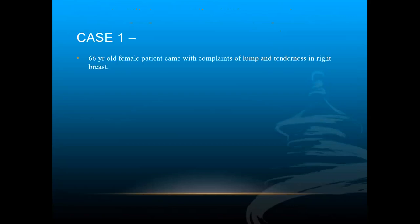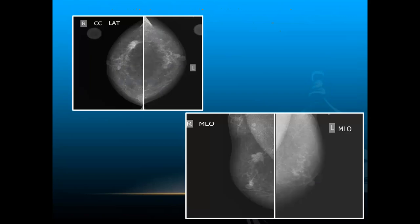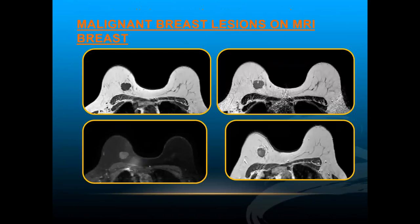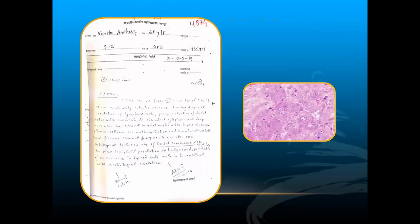Case 1: A 66-year-old female presenting with a lump and tenderness in the right breast. Mammography showed a high-density lesion in the right breast parenchyma. On MRI, a well-defined hypointense lesion was noted in the right breast parenchyma — hypointense on T1 and T2 weighted images and homogeneously enhancing on post-contrast sequences. Histopathological examination confirmed ductal carcinoma.